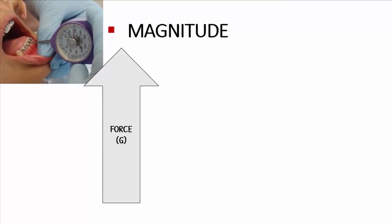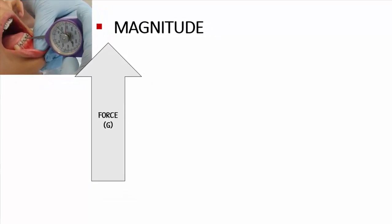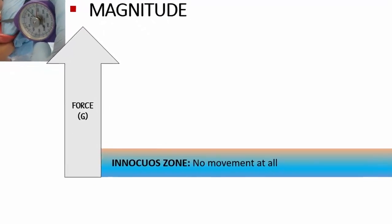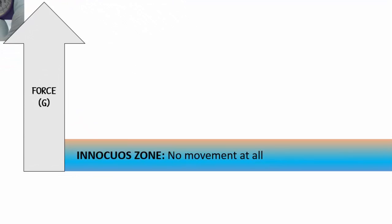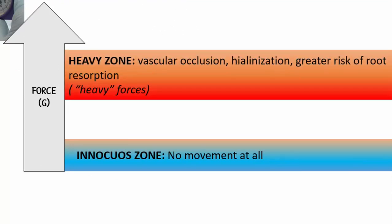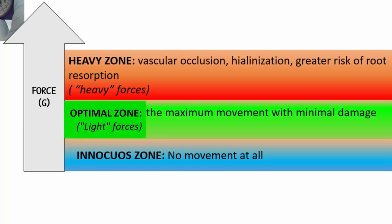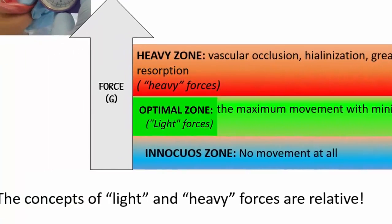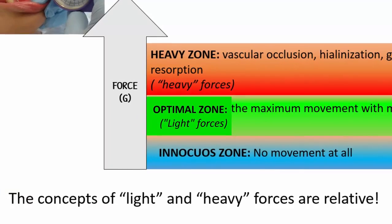Considering the biological aspect, we have three zones of force values with distinct biological response. Very low values are not sufficient to trigger orthodontic movement, whereas very high values can cause significant compression of the ligament vessels with consequent formation of areas of hyalinization and greater risk of root resorption. In an intermediate range, which would be the optimal zone, we have the force that causes the maximum movement with minimal damage to the tissues. Theoretically, the term light is used for forces that are within this range. But as we will see below, it's very difficult to establish the difference between a light and a heavy force.